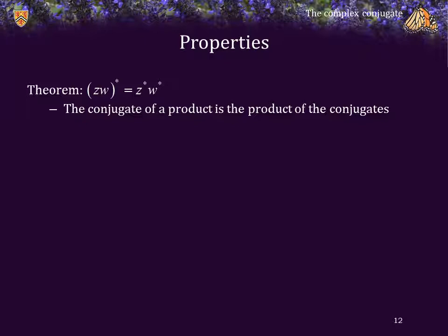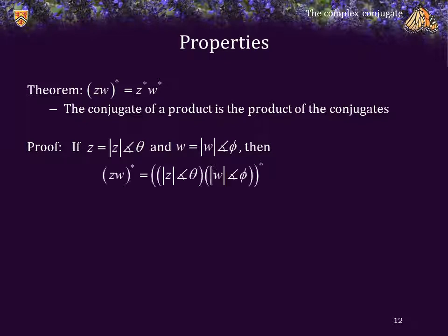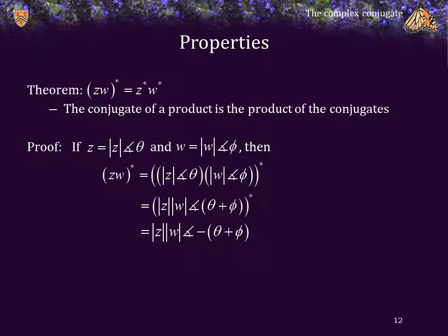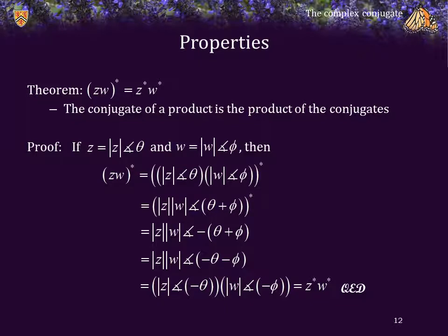Theorem: the conjugate of a product is the product of the conjugates. Proof using polar representation: let z equal the magnitude of z phase theta and w equal that magnitude phase phi. The conjugate of the product is shown in polar form — the product is the product of the magnitudes phase the sum of the angles, theta plus phi. The complex conjugate of that number is just that number with the angle negated. Expanding, that is just the product of the magnitude of z phase negative theta and the magnitude of w phase negative phi, which is z star times w star.